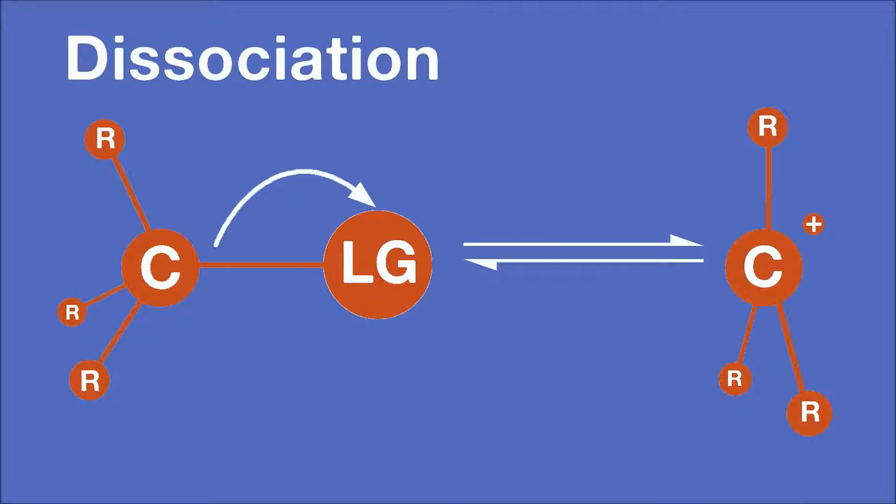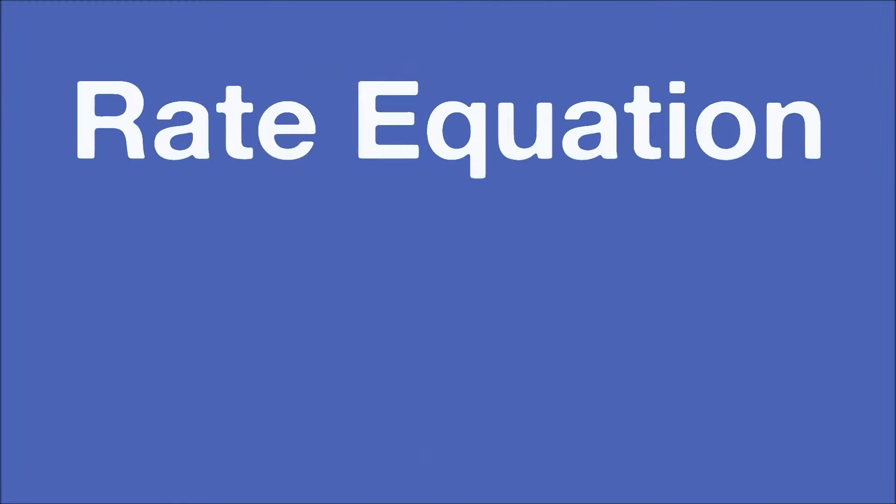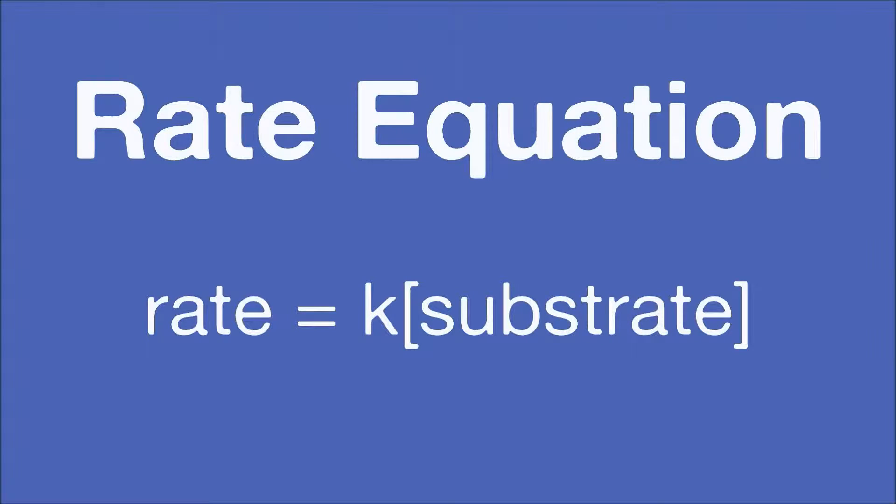Because nature prefers neutrality, making two formal charges is a tall order. This is unsurprisingly the slowest step in the reaction, and the rate equation reflects this. Only the substrate is taken into account.